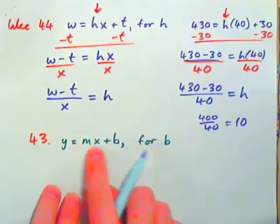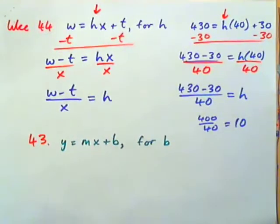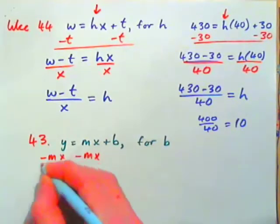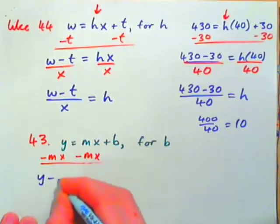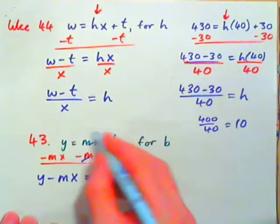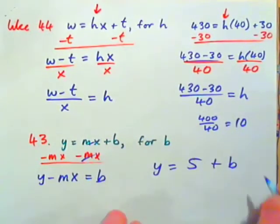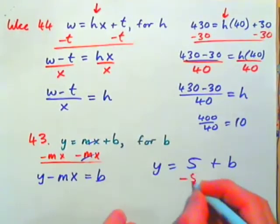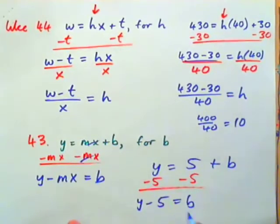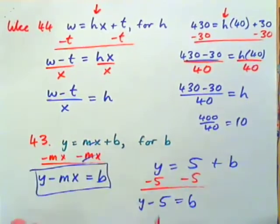Question 43: Y equals MX plus B — solve for B. All you have to do is subtract MX from both sides. MX is just a number, just as you'd subtract 5 from both sides if Y equals 5 plus B to get Y minus 5 equals B. So B equals Y minus MX.